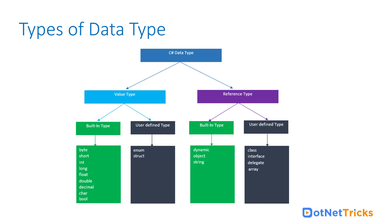For the value type, we can categorize into built-in type and the user-defined type. In built-in type, we have byte, short, integer, long, float, double, decimal, char, and boolean. So all these types fall into the category of built-in type, and enum and struct will be the part of the user-defined type.